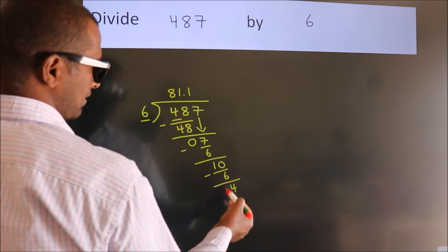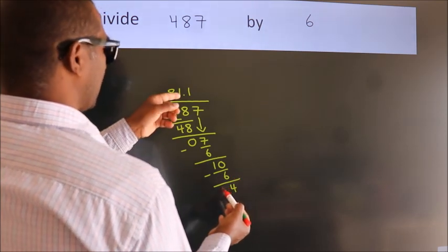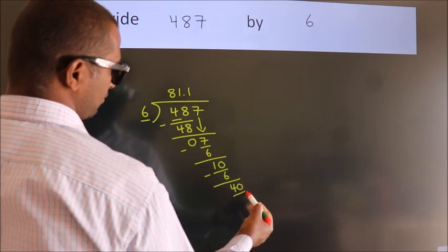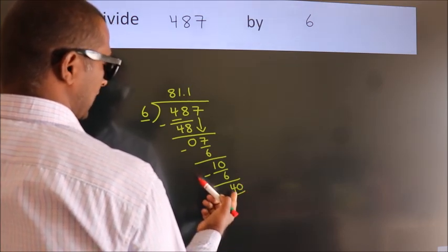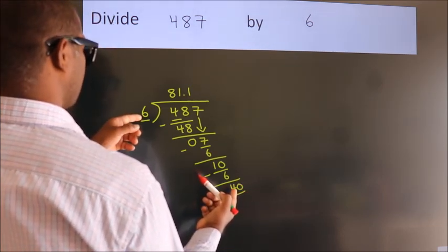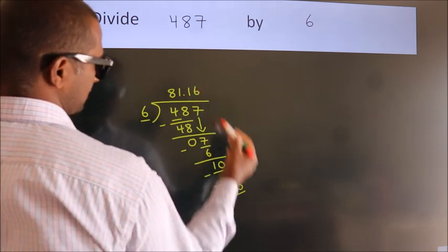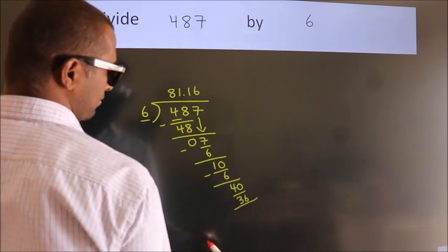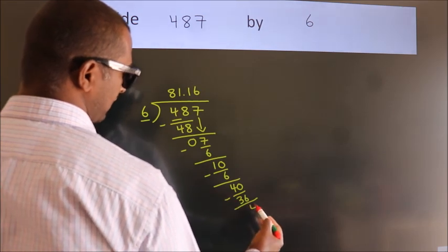After this, we already have the decimal. So directly take 0. So 40. A number close to 40 in 6 table is 6 6 36. Now we subtract. We get 4.